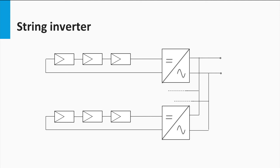Then we have the string-inverter concept, which seeks to strike a balance between the module-level inverter and the central inverter topologies. The string-inverter topology is more resilient to mismatch than the central inverter, because each string is independently operated at its maximum power point, thus guaranteeing a higher energy yield. String inverters are smaller than central inverters. However, the implementation is more complex than the module inverter. Also, partial shading will have a greater influence over the string-inverter topology than over the micro-inverter topology.